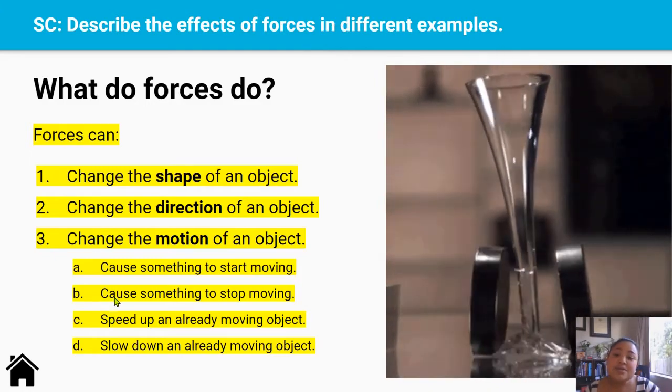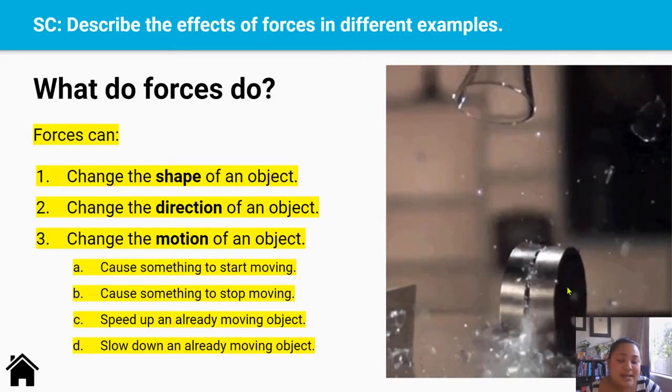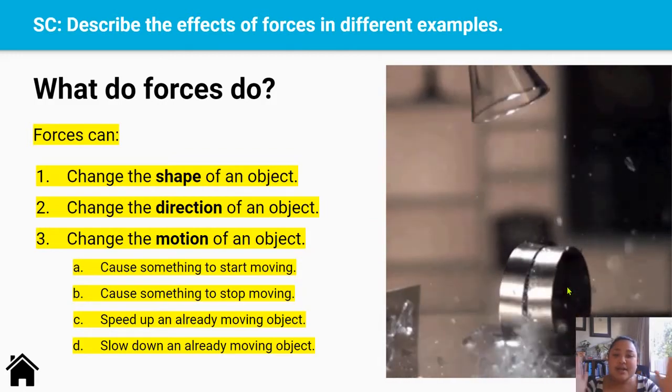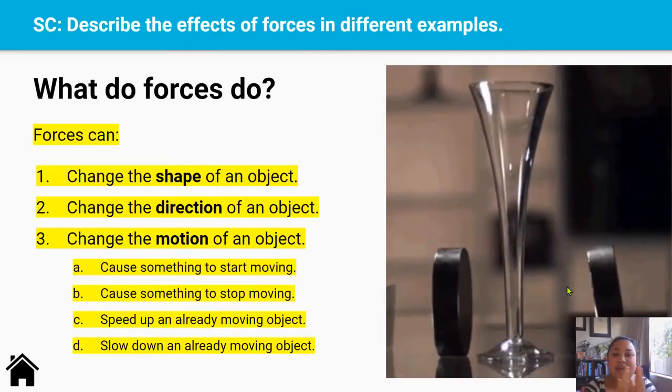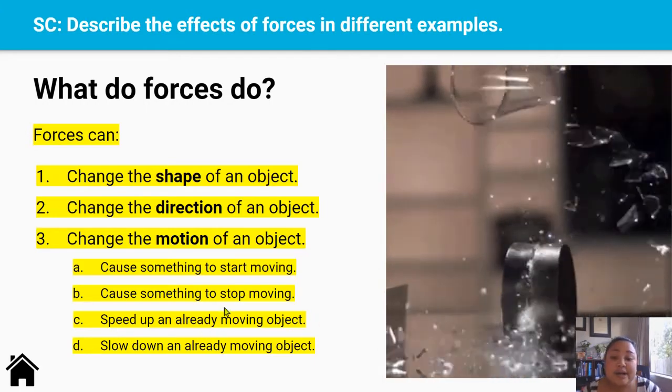And look, it can also cause something to stop moving. So when these two magnets crash onto each other, they stop because they have nowhere else to go. It can cause objects that are already moving to speed up.